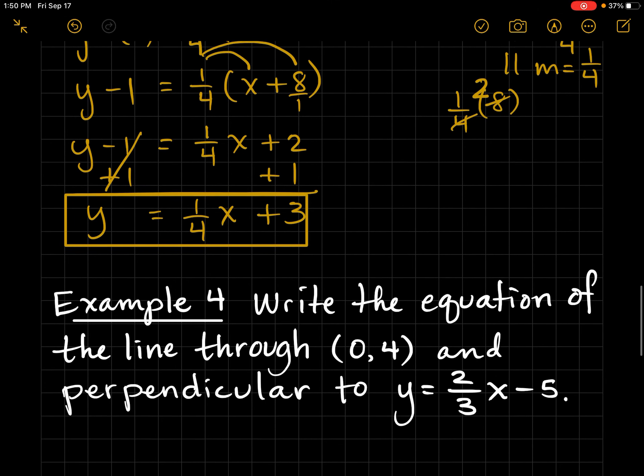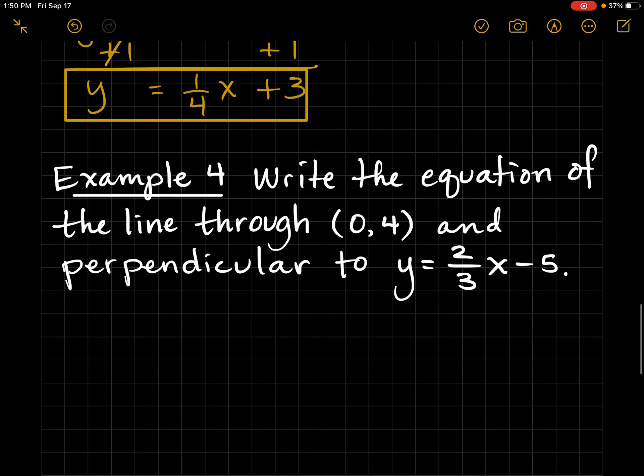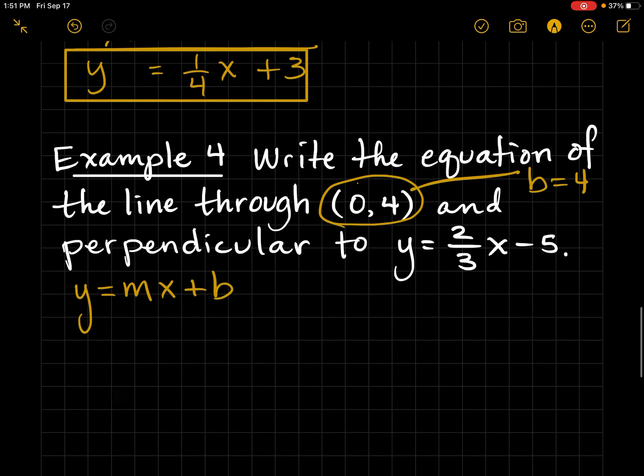Example 4: Write the equation of the line through (0, 4) and perpendicular to Y equals 2 thirds X minus 5. The first thing I notice is that this is a Y-intercept. Anytime X equals 0, now I know B equals 4. So I don't want to use point-slope form. In this case, I want to use slope-intercept because I have a Y-intercept for free. So that's the beauty in knowing more than one way to do problems.